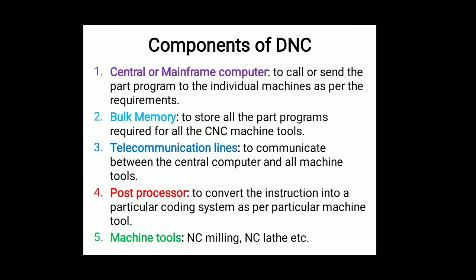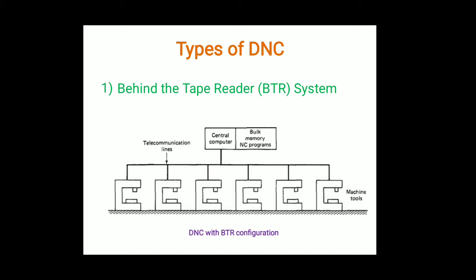The last component is machine tools — for example, NC milling and NC lathe. These are examples of the machine tools. So these are the components of the DNC. Now we will see the next part: the types of DNC.